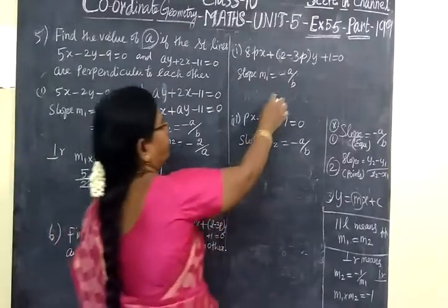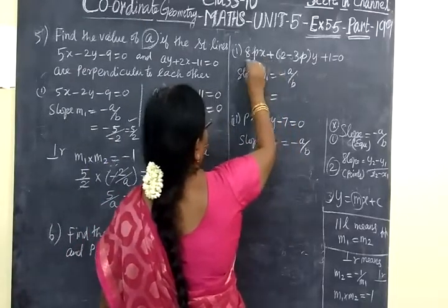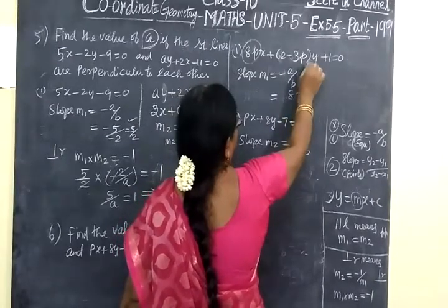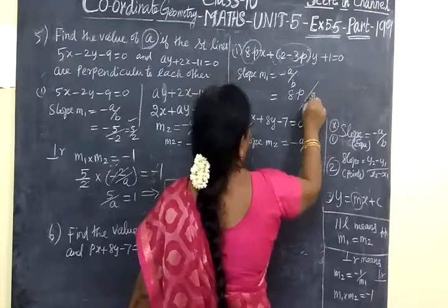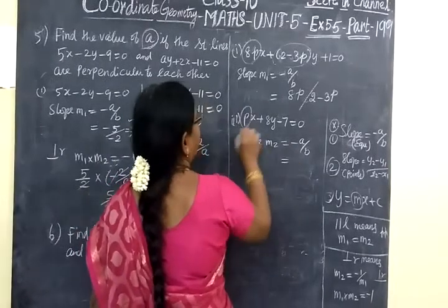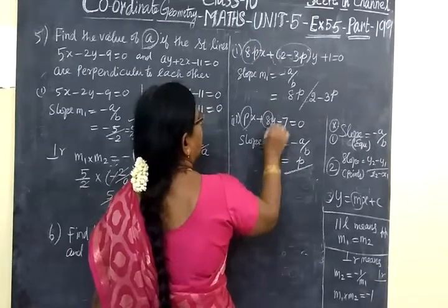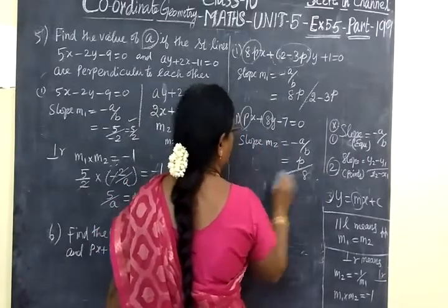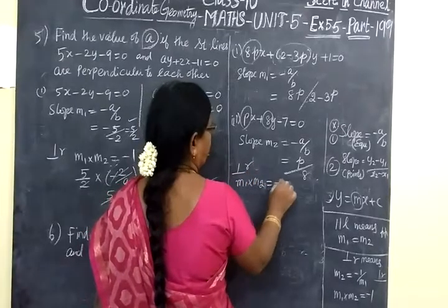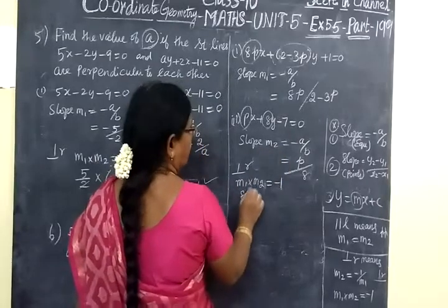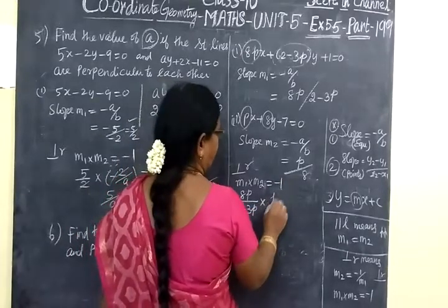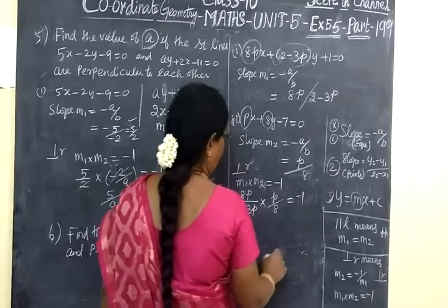Now here, minus A by B. A equal to 8P, so 8P by B equals 2 minus 3P. Here A equal to P, so P by B equals 8. So perpendicular means M1 into M2 equal to minus 1.